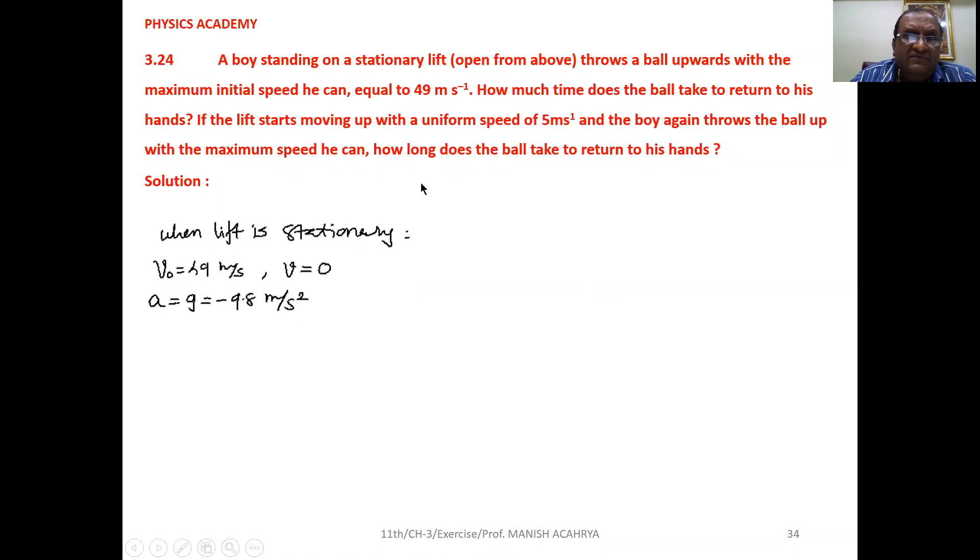When the lift is stationary, initial speed with which the ball is thrown is 49 meters per second. When it reaches the maximum height, final velocity will be 0. So V = 0. Acceleration, that is gravitational acceleration, is -9.8 meters per second squared.